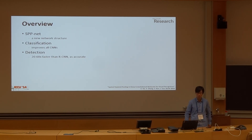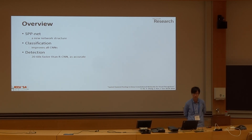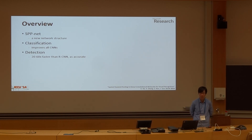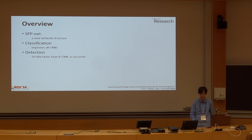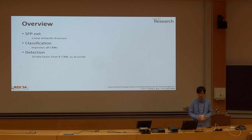As an overview, we propose a new model called SPDNet — it is a new network structure. For the classification task, SPDNet will improve all the CNN structures. And for the detection task, the new model is at least tens of times faster than the RCNN model and is as accurate.